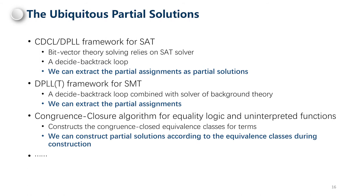In fact, partial solutions are ubiquitous. Many constraint-solving algorithms support partial solutions. For example, the CDCL framework for SAT is a popular algorithm. Bit-vector theory solving relies on SAT. CDCL is a decide-backtrack loop. In each loop iteration, the decide phase chooses an assignment to a selected variable. Then the backtracking phase erases some assignments to resolve conflicts. We can extract partial assignments as partial solutions. The DPLL(T) framework extends CDCL with decision procedures for background theories — also a decide-backtrack loop where we can extract partial solutions similarly. The congruence-closure algorithm constructs congruence-closed equivalence classes for terms in equality logic and uninterpreted functions. We can construct partial solutions according to the equivalence classes at any point during construction.